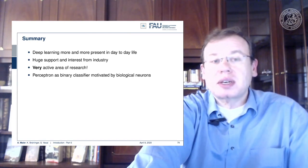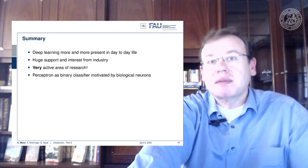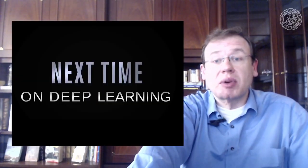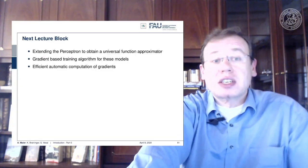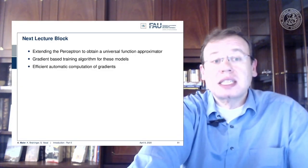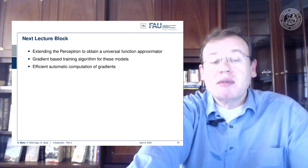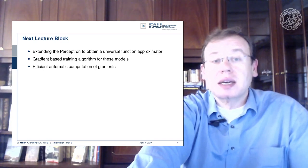We looked into the Perceptron as a classifier and its relation to biological neurons. We are going to get to human-level intelligence — artificial general intelligence at some point — and that's certainly going to change our place in the food chain, as machines will take over a lot of the tedious things we do now. Next time in Deep Learning, we will extend the Perceptron to a universal function approximator, look into gradient-based training algorithms for these models, and also look into the efficient computation of gradients.